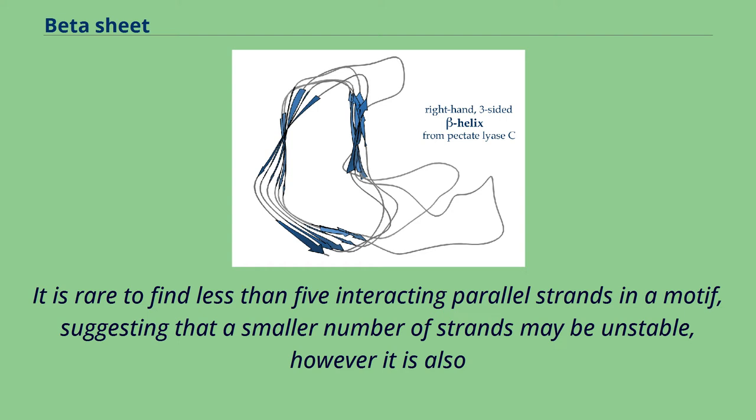It is rare to find less than five interacting parallel strands in a motif, suggesting that a smaller number of strands may be unstable.